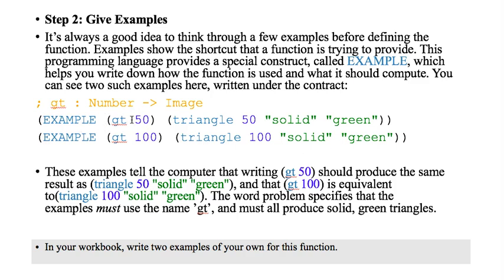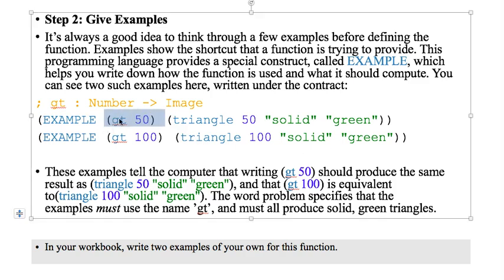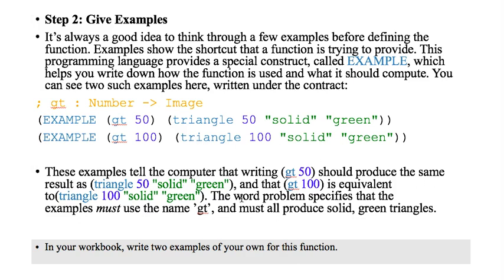So we want our GT function. We're just going to call it GT 50. And then that should produce the same thing. So GT 50, if we write GT correctly, then GT 50 should make the same thing as this. It's just a shortcut. And so that's what we want to do. And here's another example. GT 100 should produce this. So these examples tell the computer that writing GT 50 should be the same as those. So the word problems told us that the examples must use the name GT and must produce solid green triangles. So in your workbook, write your own two examples for this function. You can't use these exactly, but make something a little bit different, but that are valid examples of how to use the GT function.